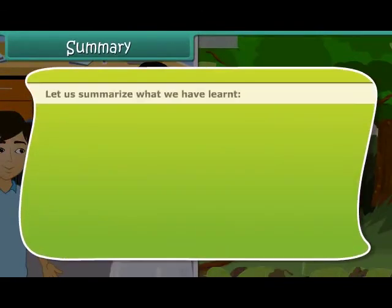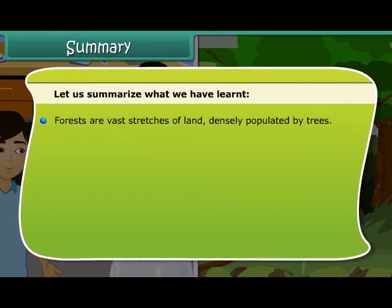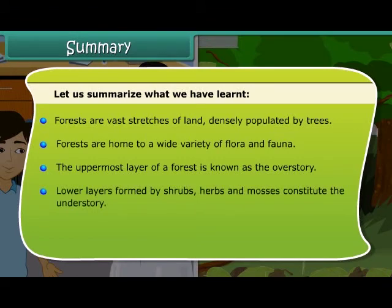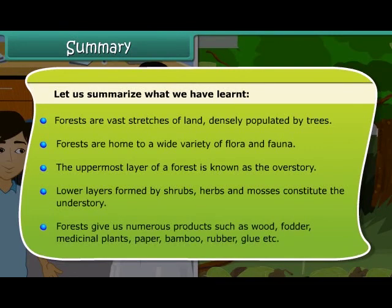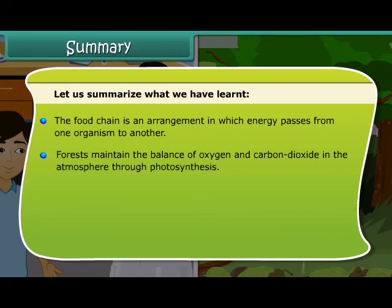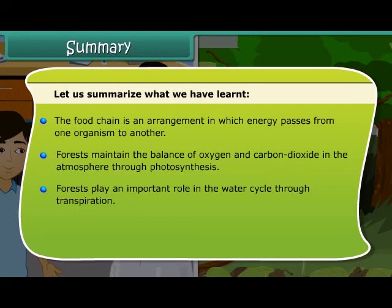Summary: Forests are vast stretches of land densely populated by trees. Forests are home to a wide variety of flora and fauna. The uppermost layer of a forest is known as the overstory; lower layers formed by shrubs, herbs and mosses constitute the understory. Forests give us numerous products such as wood, fodder, medicinal plants, paper, bamboo, rubber, glue, etc. The food chain is an arrangement in which energy passes from one organism to another. Forests maintain the balance of oxygen and carbon dioxide in the atmosphere through photosynthesis. Forests play an important role in the water cycle through transpiration. Forests prevent soil erosion and air and water pollution.